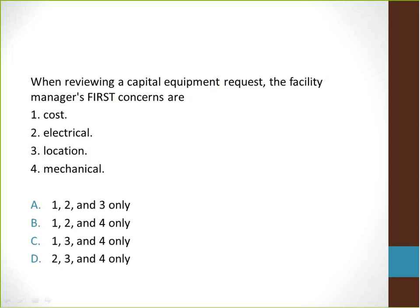When reviewing a capital equipment request, the facility manager's first concerns are: one, cost; two, electrical; three, location; four, mechanical. They are looking for three out of four true answers. Answer D is the correct response — answers two, three, and four are all correct. Answer one is false because while the cost of capital equipment is important, it should not be the first consideration for the facility manager.